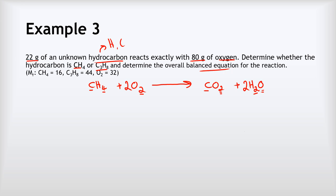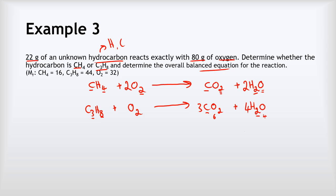For propane, C₃H₈ + O₂ → CO₂ + H₂O. Balancing: three carbons on the left, so put a three in front of CO₂. Eight hydrogens on the left, so put a four in front of H₂O giving eight. For oxygens: three CO₂ gives six, four H₂O gives four — ten total on the right — so put a five in front of O₂. Balanced: C₃H₈ + 5O₂ → 3CO₂ + 4H₂O.